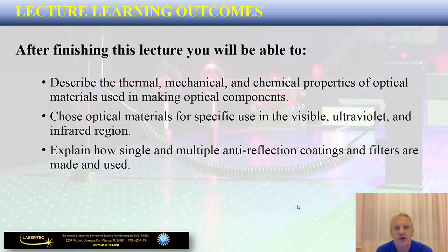Specifically, we are going to talk about the thermal, mechanical, and chemical properties of optical materials in addition to their primary optical characteristics. We'll also look at different optical materials and see how we can choose a specific type for use in different spectral regions such as visible, ultraviolet, and infrared.